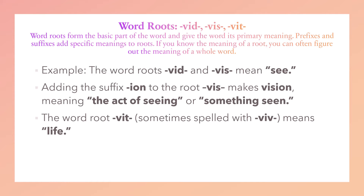Because once you know the root, there are more chances you're more likely to figure out the meaning of the word. For example, the word roots vid and vi mean 'see.' So whenever you find them in a word, you know that this word has to do with the verb 'see.' Adding the suffix -ion to the root vi — and -ion, which we studied before — makes 'vision.' And as you know, -ion turns words into nouns. So 'vision' means the act of seeing.